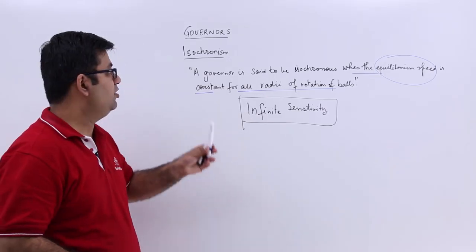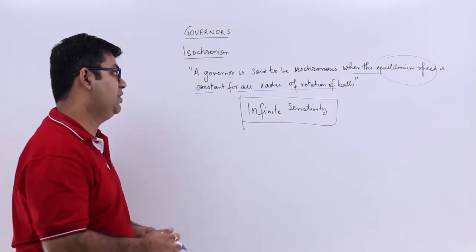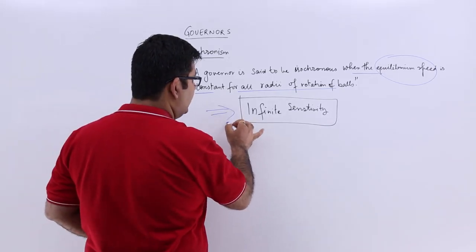When such a condition occurs, your governor is called an isochronism governor. And an isochronism governor has infinite sensitivity.